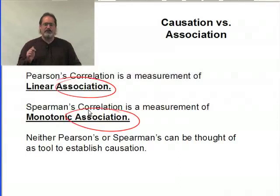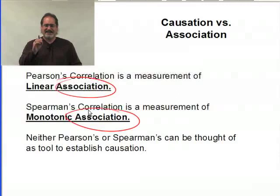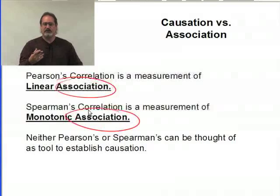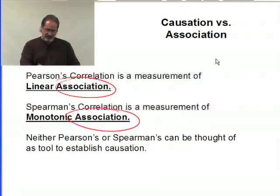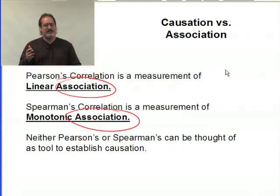It's extremely important that you understand there's a huge difference between saying A causes B versus there's an association or a strong association between A and B. As A changes, we see B changing — this occurs — but saying it causes it, not a good idea. That's all I really want to talk about to make sure you grasp the idea that causation and association are two different things.